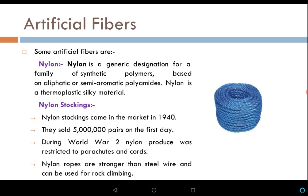During the Second World War, nylon production was restricted to only parachutes and cords — nothing else could be made from nylon. This was because soldiers used parachutes and cords during aerial battles. Nylon ropes are stronger than steel wire and can be used for rock climbing.